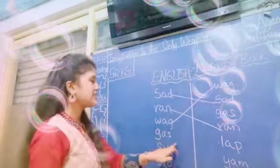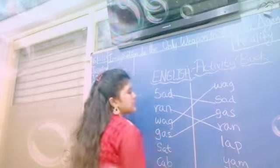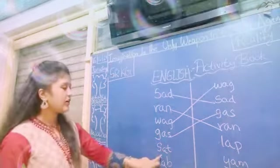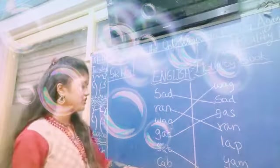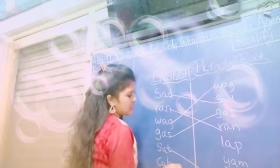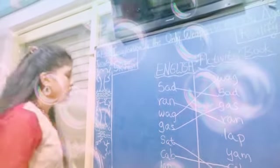Now gas. G A S — gas. So you have to match like this. Now S A T — sat. Now C A B — cab. So you have to match C A B — cab like this. C A B — cab. Now lap. So you have to match L A P — lap like this.